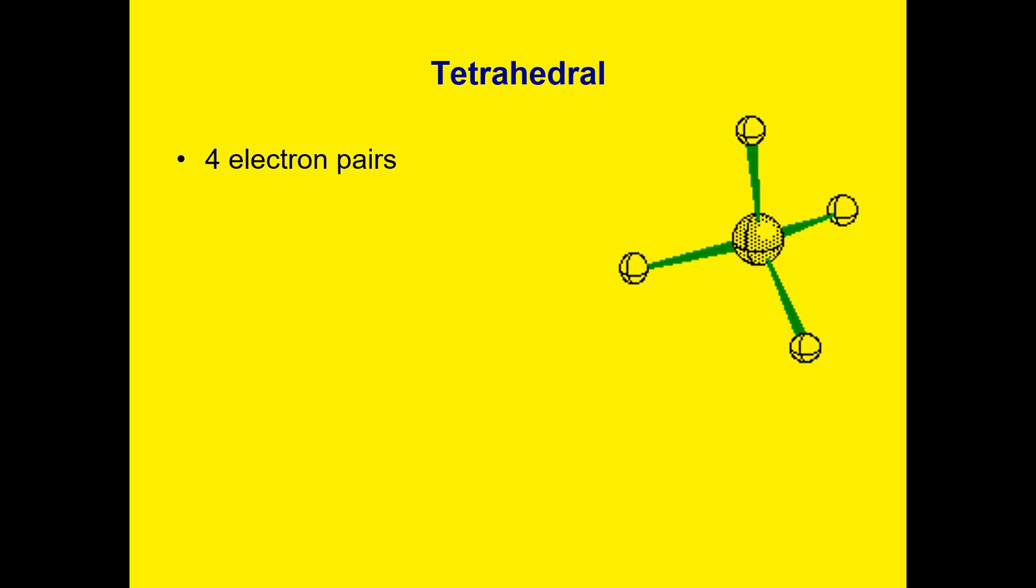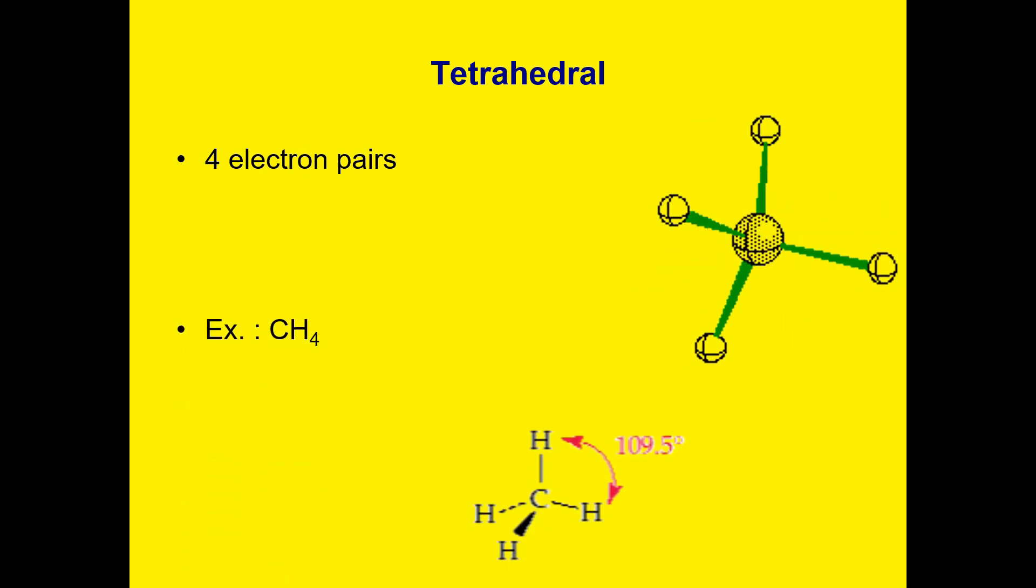Third, we have tetrahedral. We have four electron pairs formed. Example is carbon bonded with hydrogen. The bond angle is 109.5 degrees.